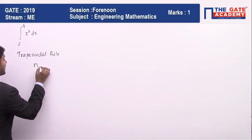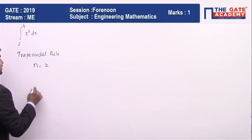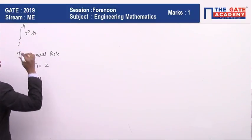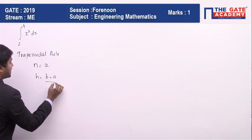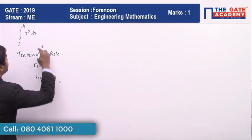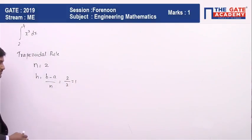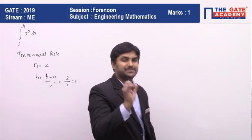If the value of n is 2, then h will be equal to b minus a by n, so it's going to be 4 minus 2 which is 2, by 2 which equals 1. So the step size is going to be equal to 1.